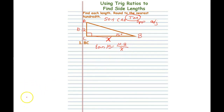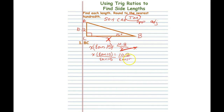Multiply both sides by X to get X times tangent 15 equals 10.2, then divide both sides by tangent 15. So X equals 10.2 over tangent 15. Put that in your calculator and you should get 38.07. So side BC equals 38.07.